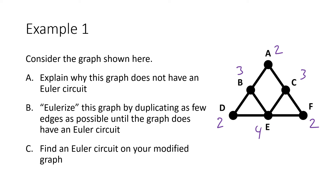B and C are the bad vertices we want to fix, but we can't draw a new edge directly from B to C. Instead, I'll draw a new edge from B to A — that makes B degree 4, good, but A becomes degree 3. So we fixed B but broke A. That's okay: if we also duplicate the edge from A to C, now A goes up to 4 and C goes from 3 to 4, and all degrees are even.